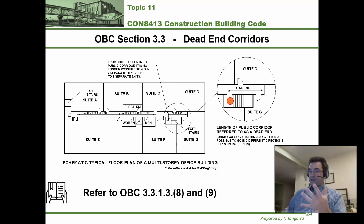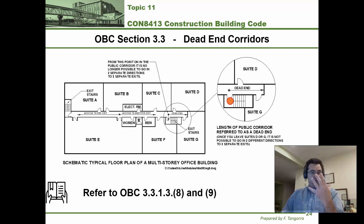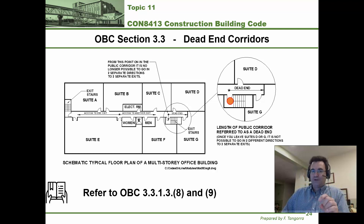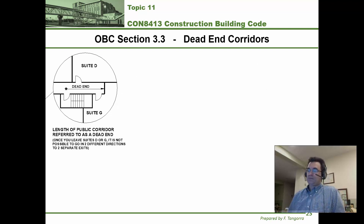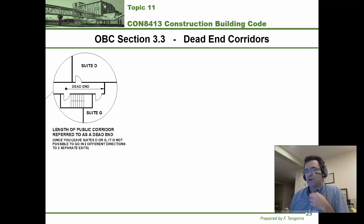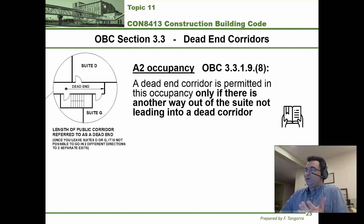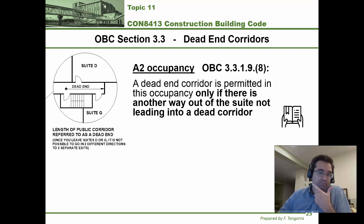The building code has a lot to say about dead-end corridors. Sometimes they're allowed, sometimes they're not, and sometimes they're allowed if certain conditions apply. We're going to go over them quickly in the lecture, but they're listed in your course notes and you must review them and know how to find them in the building code. For A2 occupancies, a dead-end corridor is allowed as long as there is another way out of the suite that does not lead into a dead-end corridor.